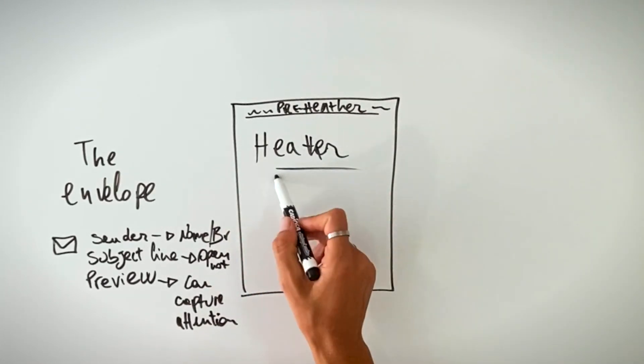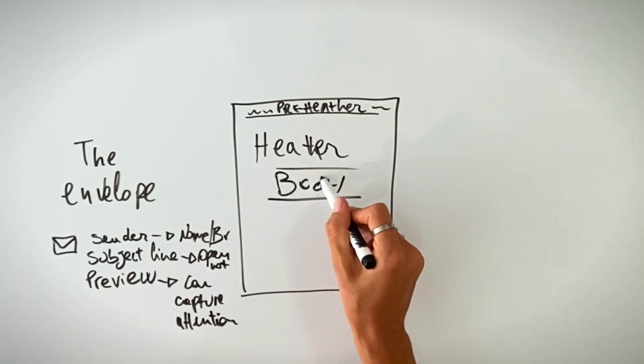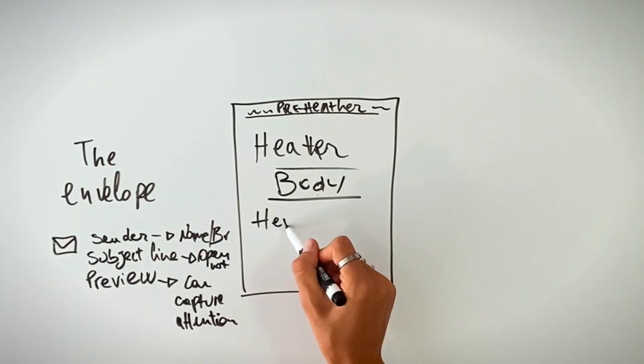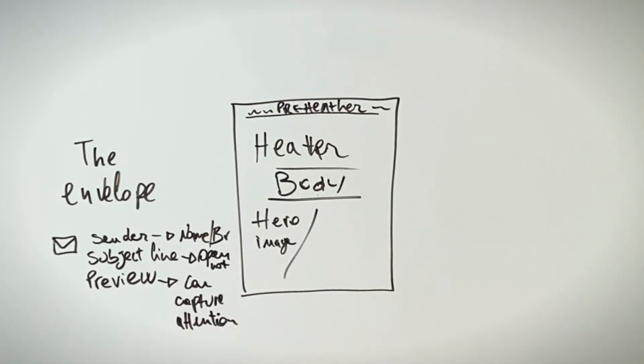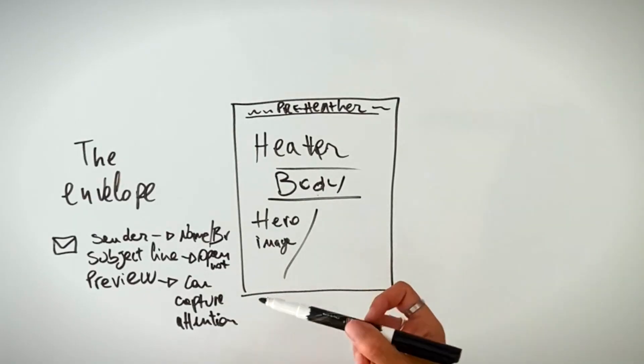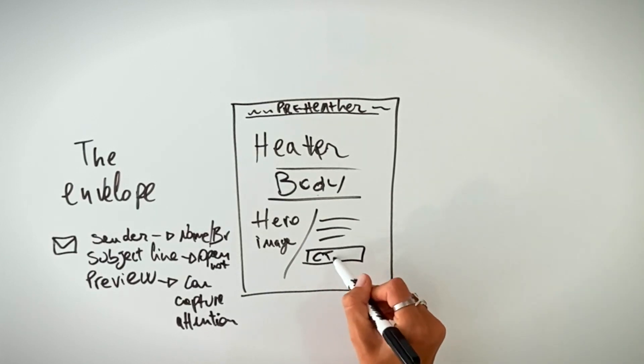Then there is the body of the email. Sometimes we have hero images — if you're a clothing brand, on Shopify, or doing dropshipping, you need images to show your products. You'll have hero images, then more text, and then a call to action (CTA). A clear CTA doesn't have to be a link to a sales page every time.